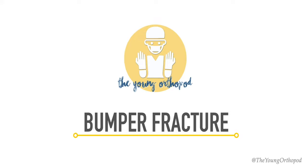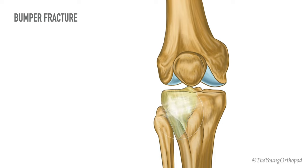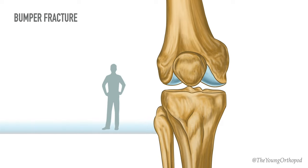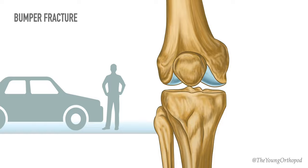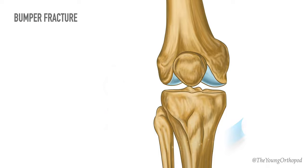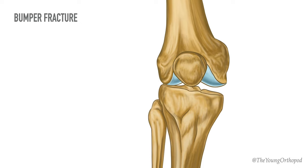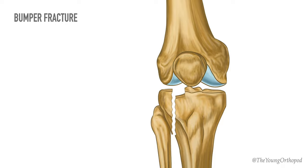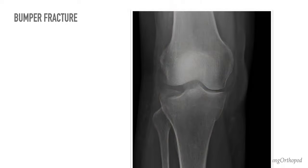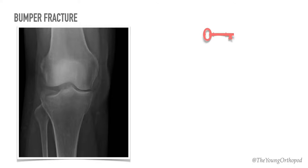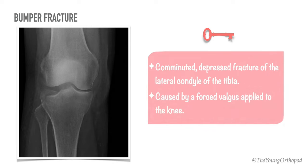Bumper fracture is a comminuted, depressed fracture of the lateral condyle of the tibia. The mechanism of injury is forced valgus of the knee when struck from the side by a car bumper. This causes the lateral part of the distal femur and the lateral part of the tibial plateau to come into contact, compressing the tibial plateau and causing the tibia to fracture. In 1929, Cotton and Berg coined the name 'bumper fracture' for the injury caused by the impact of a car bumper against the outer aspect of the extended knee.